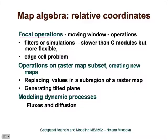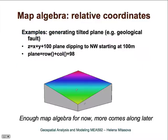Some map algebra tools also support operations on raster map subsets, so you can define the region for which you want to apply the algebra expression. You can also use map algebra to create new maps representing certain functions — either a tilted plane or a small hill — when you want to do tests or simulations. Neighborhood operations in map algebra can also be used for modeling dynamic processes such as fluxes and diffusion.